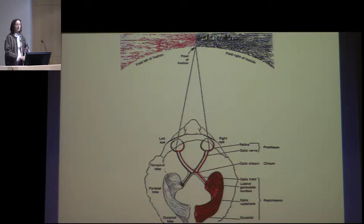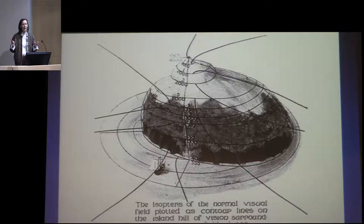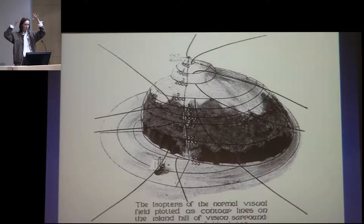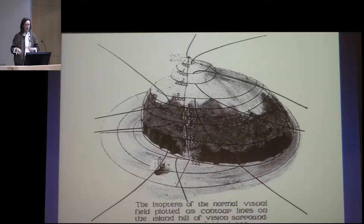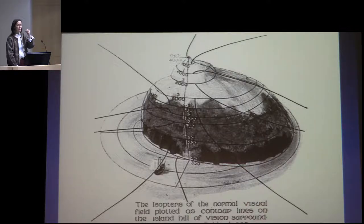You all remember the visual system. There are a variety of ways in which you can test it. A lot of people conceive of the visual field as a mountain of vision in a sea of darkness. Vision is not as good in the periphery and gets better toward the center, with this rising peak indicating better and better acuity.